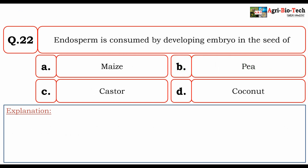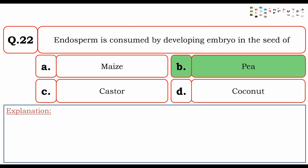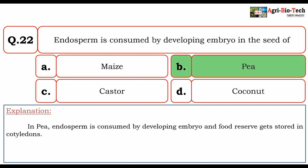Endosperm is consumed by the developing embryo in the seed of: A. maize, B. pea, C. castor, D. coconut. The correct option is B. pea. In pea, endosperm is consumed by the developing embryo and food reserves get stored in the cotyledons.